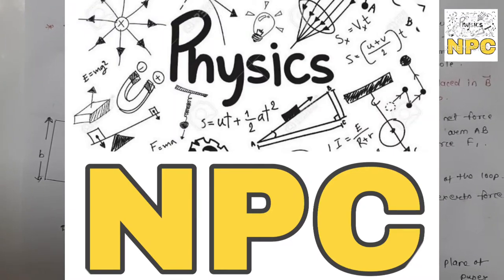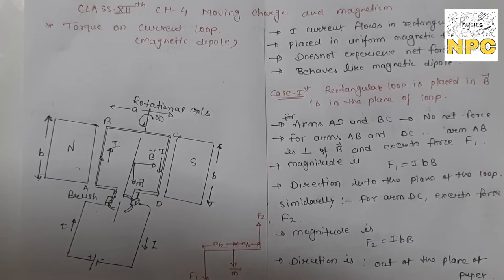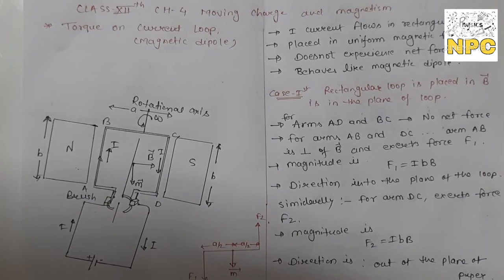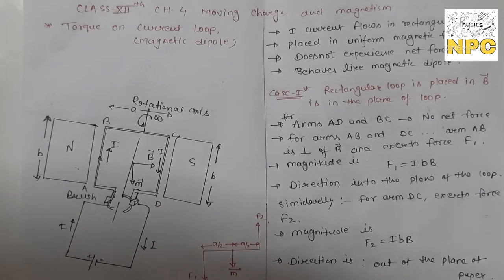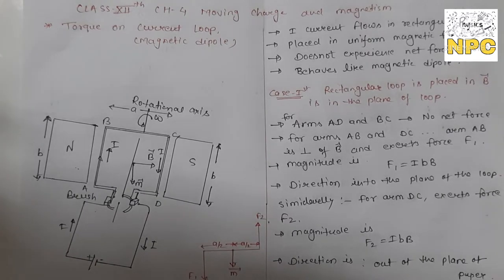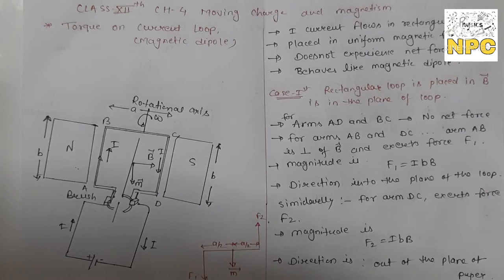Hello friends, my name is Trukti and welcome back to NBC, the channel where you can learn all the concepts related to physics. We are here for discussing a new topic, and that is torque on a current loop. We will discuss what happens if we put a rectangular coil in a uniform magnetic field. Let's start our topic on torque on a current loop.